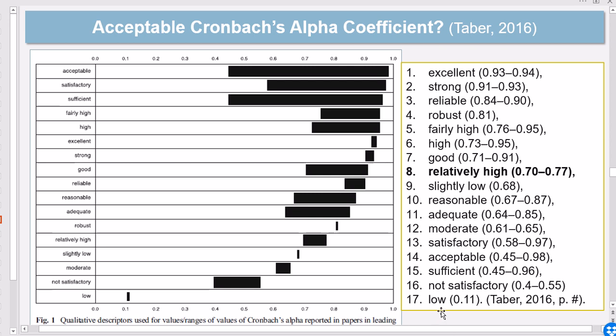As you can see, different authors have interpreted Cronbach's alpha coefficients in different ways. For example, some people have mentioned that the low index is something around 0.11. And the interesting thing is, for example, the overlap between number 16 and number 15. Some people who published papers referred to a wide range between 0.45 to 0.96 as sufficient, whereas other people refer to something that actually still overlaps partially with the sufficient range, as that's 0.4 to 0.55, as none or not satisfactory.